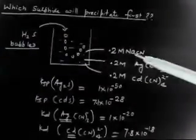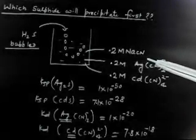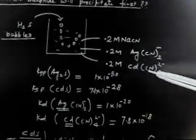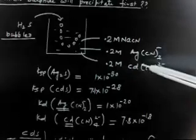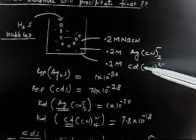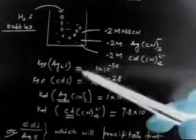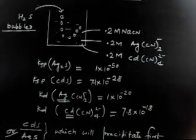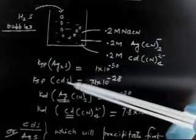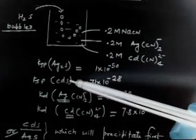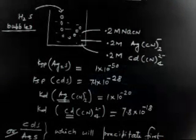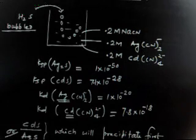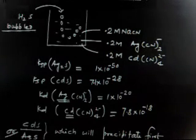The solution contains 0.2M NaCN, so we know the concentration of CN⁻. Using KD for each complex equation, we can calculate [Ag⁺] and [Cd²⁺]. Once we know [Cd²⁺], we can calculate the [S²⁻] required just for precipitation. Think about how to proceed before looking at the solution.